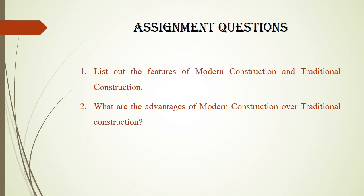Now you have to answer the assignment questions and submit them by mail. First question: list out any five features of modern construction technique and any five features of traditional construction techniques. Second question: what are the advantages of modern construction over traditional construction? List any five to ten advantages and state which one is most beneficial and user-friendly. Study the portion, go through the video lecture, and answer these questions and submit as soon as possible.